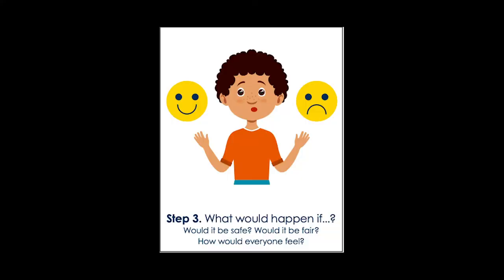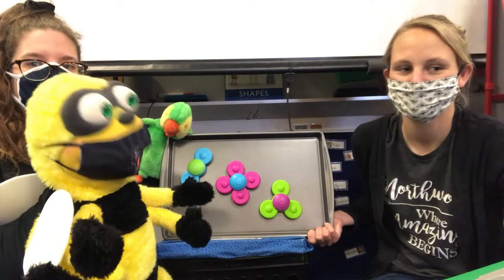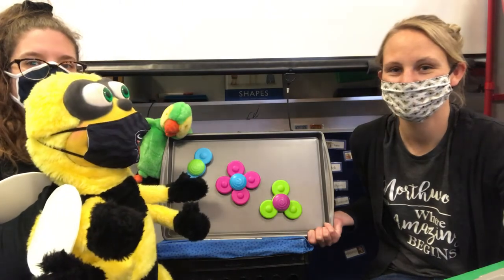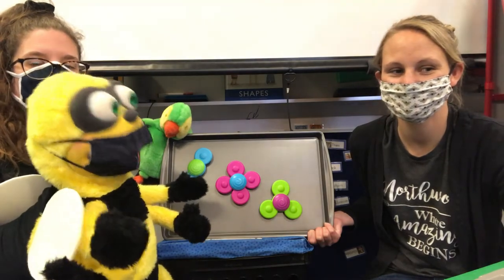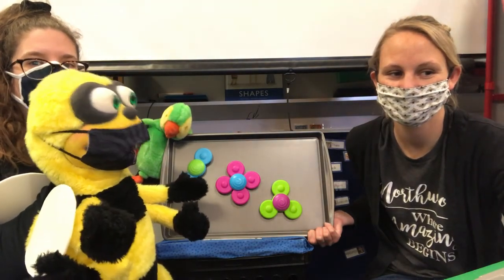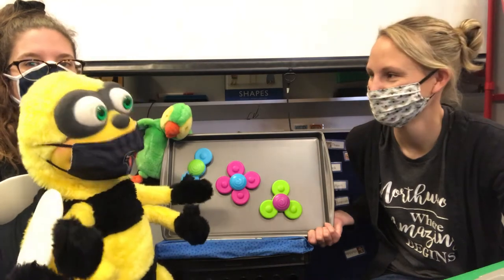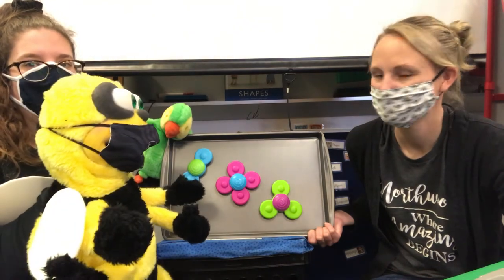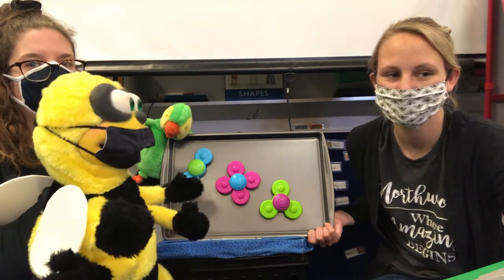Step number three is: ask yourself what would happen if you tried your solution. Would it be safe? Would it be fair? And how would everyone feel? Well, Squawker might say okay. Squawker might tell me I need to set a timer. And maybe Squawker might say no.